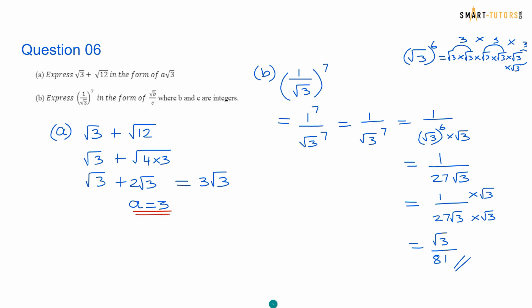Part b, 1 over root 3 to the power 7. The 7 belongs to 1 and root 3 as well. 1 to the power 7 is 1. Root 3 to the power 7 can be written as root 3 to the power 6 times root 3. Root 3 to the power 6 will work out to 27. So 1 over 27 root 3. Rationalize the denominator. Root 3 times root 3 is 3. 3 times 27 is 81. So root 3 over 81. You may lose one or two marks if you are not rationalized.